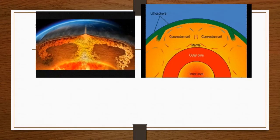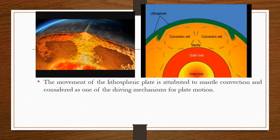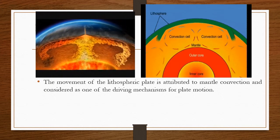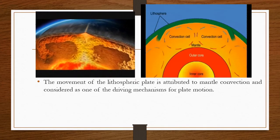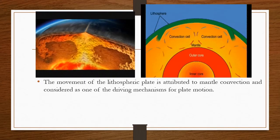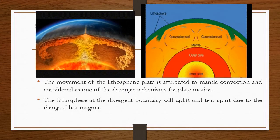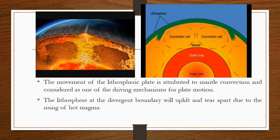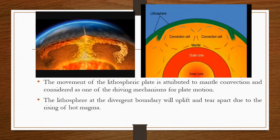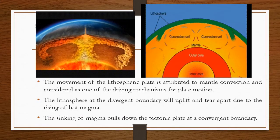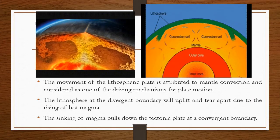Here is an animation showing what happens during convection current or mantle convection. The movement of the lithospheric plate is attributed to mantle convection, considered as one of the driving mechanisms for plate motion. As the hot and cold fluid cycle, it creates movement in the lithospheric plates. The lithosphere at the divergent boundary will uplift and tear apart due to the rising of hot magma, while the sinking of magma pulls down the tectonic plate at a convergent boundary.